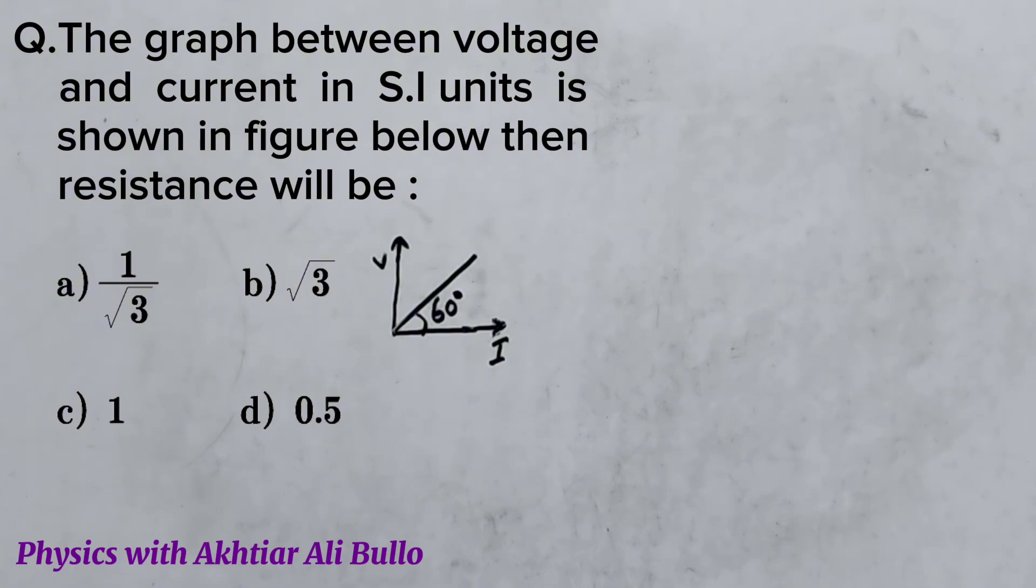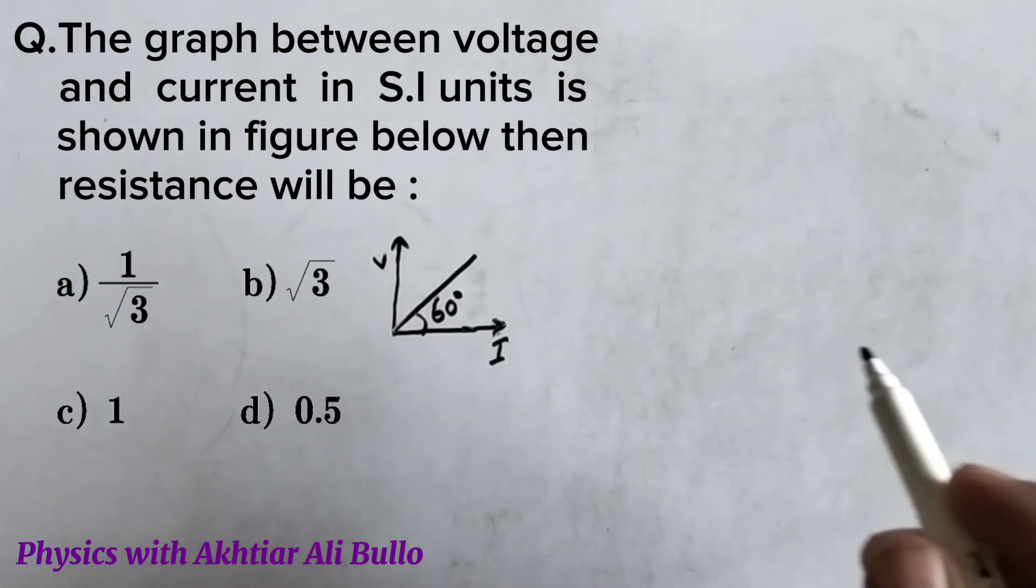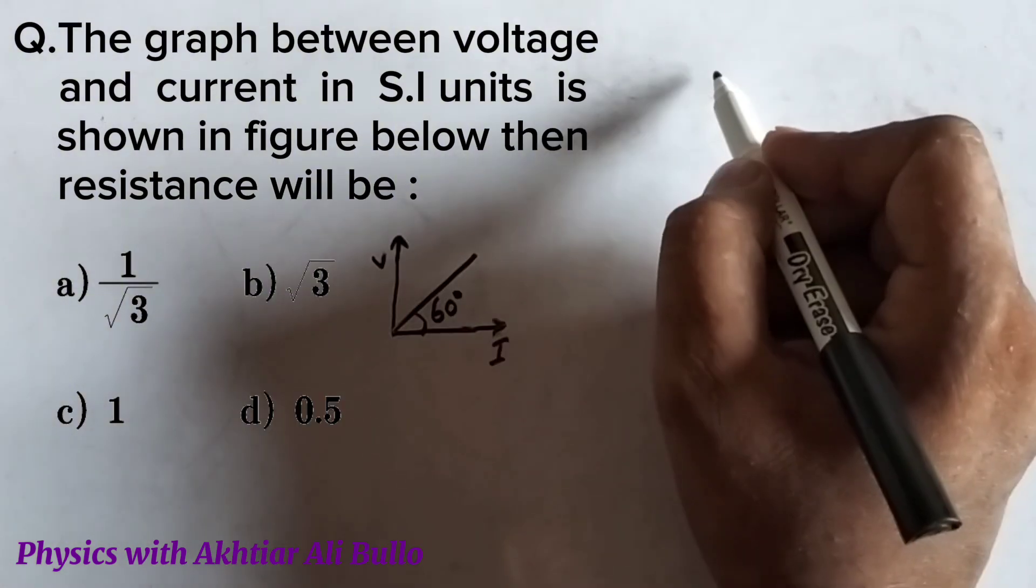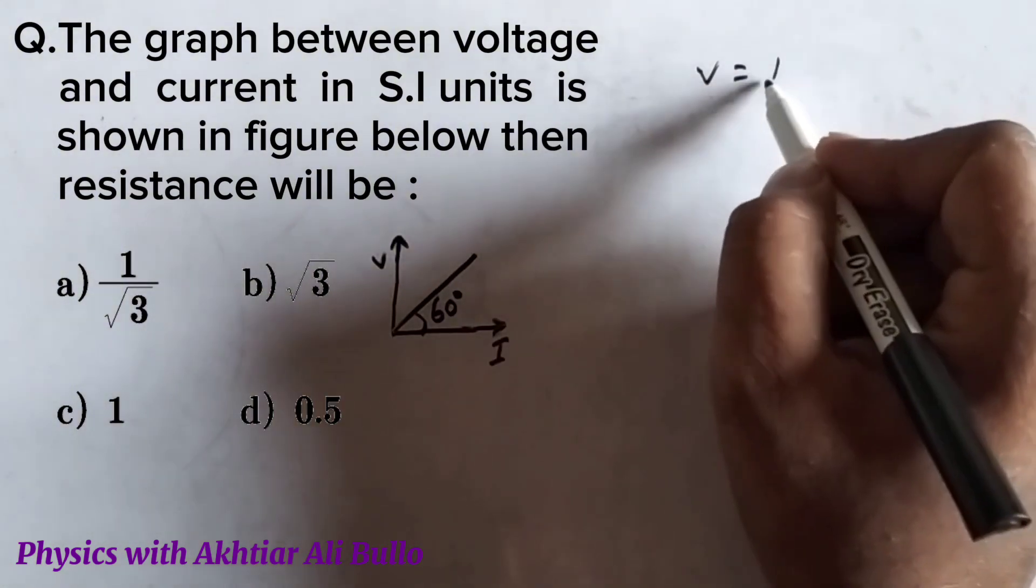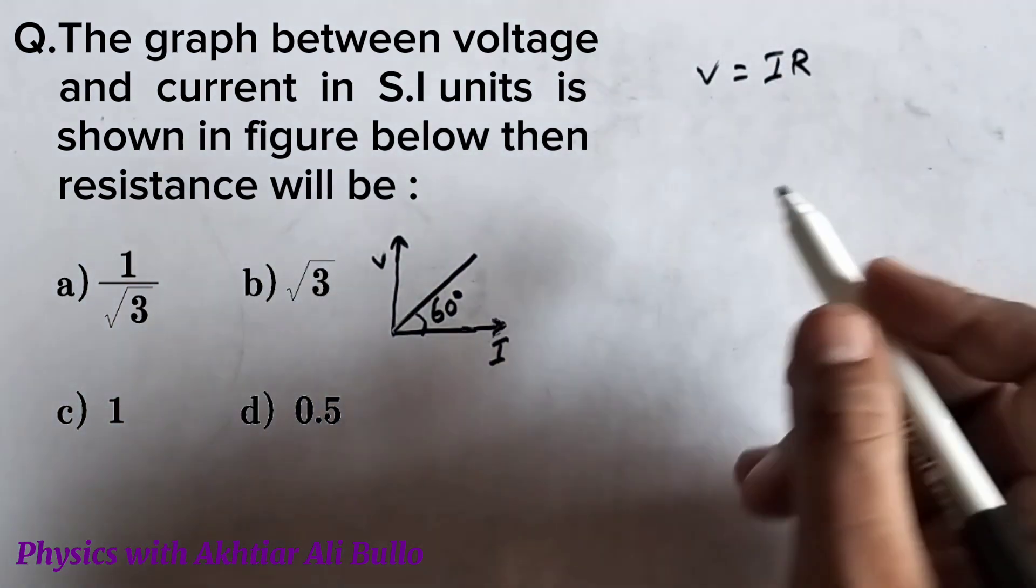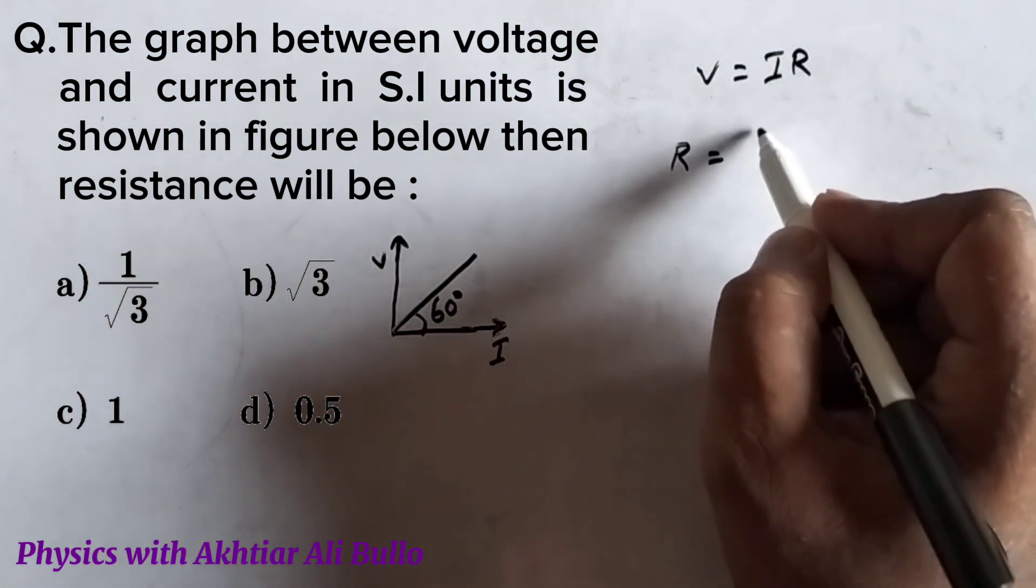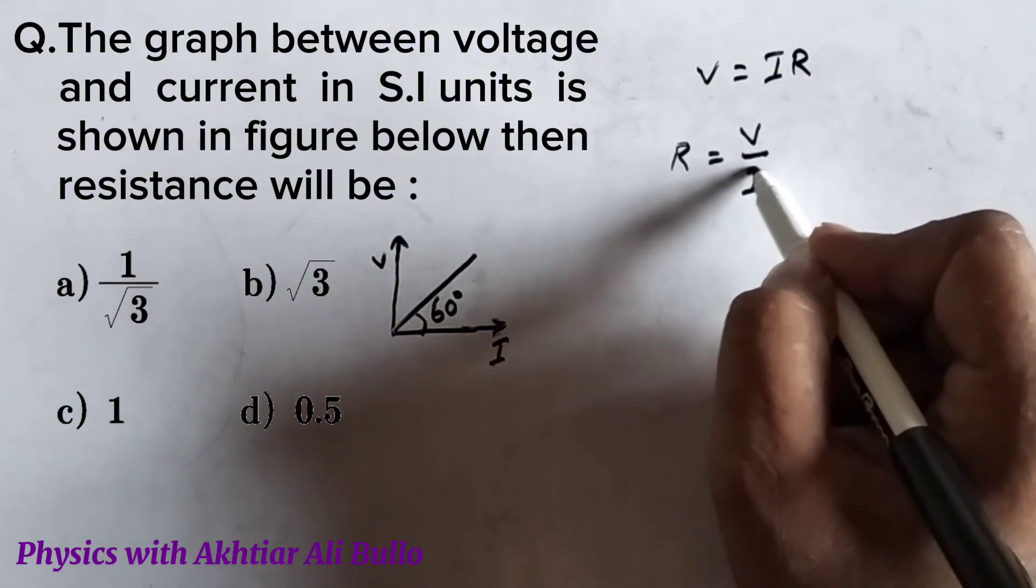As we have to find the slope of voltage and current, which means resistance, as V is equal to IR, so R will be equal to V upon I.